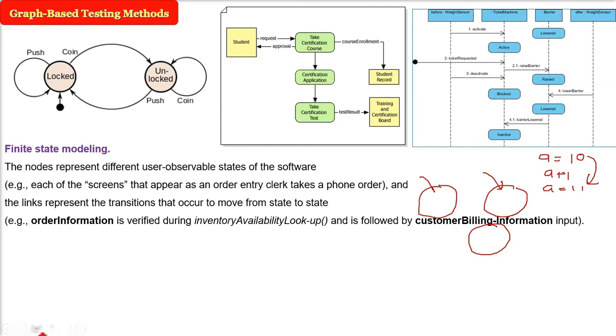For example, I'll just give you one more example for this, finite state modeling. The order information is verified during the inventory availability lookup. And this is followed by customer billing information input. So these nodes are representing user observable states. And the link is representing the transition that occurred to move from state to state. This is the finite state modeling example.